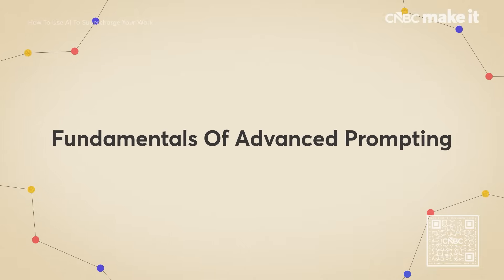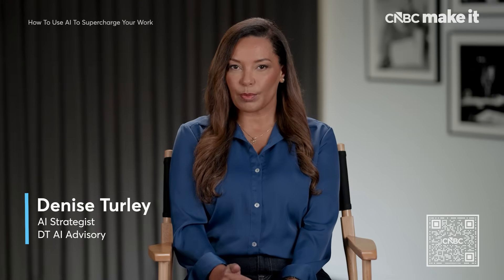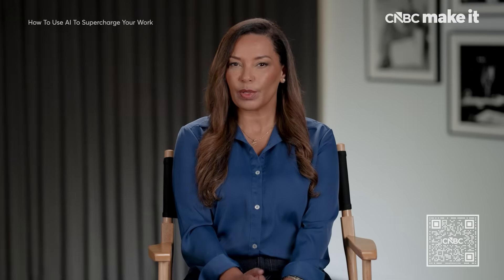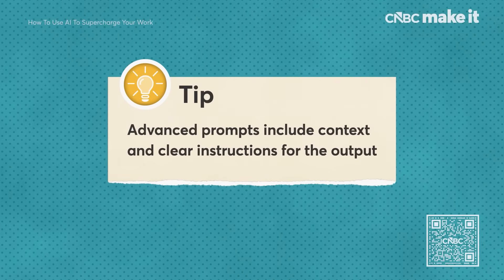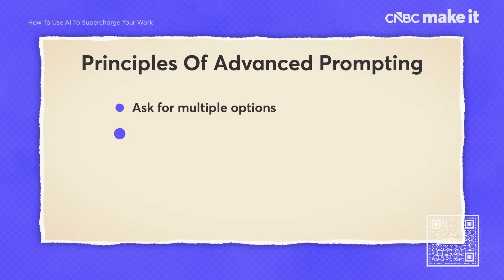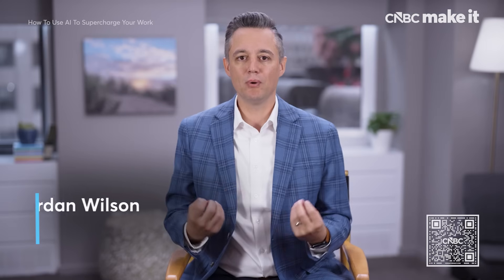Advanced prompting is really just about providing additional detail and more context. When I think about basic prompting versus advanced prompting — if I have a cupcake business, a basic prompt might say 'create a slogan for my business.' An advanced prompt gives more context and background to the AI tool. I might say, 'give me five versions of marketing slogans for my social media campaigns on Twitter, Instagram, and LinkedIn. Use a bulleted style and end with a call to action that refers people to my website, thebestcupcakes.com.' The best prompts are ones where you talk to the large language model like you would talk to a human.